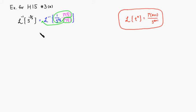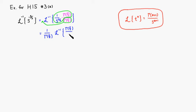So what we're going to get is 1 over gamma of 5 halves — that's just a constant — times the inverse Laplace transform of gamma of 5 halves over s to the 5 halves. We can see that a plus 1 equals 5 halves, which means a equals 3 halves, so this gives us t to the 3 halves.